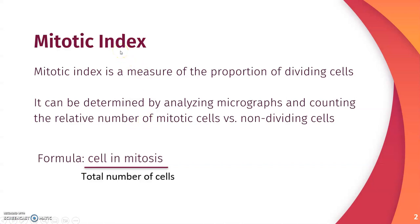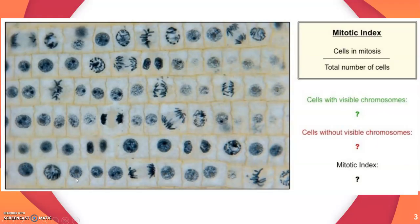Let's first talk about mitotic index. What is that? Mitotic index is a measure of the proportion of dividing cells. You can calculate mitotic index by analyzing micrographs, and by counting the relative number of mitotic cells versus the non-dividing cells. We're dividing the cells that are going through mitosis — which is basically nuclear division — by the total number of cells shown on the micrograph. There is a formula for mitotic index.